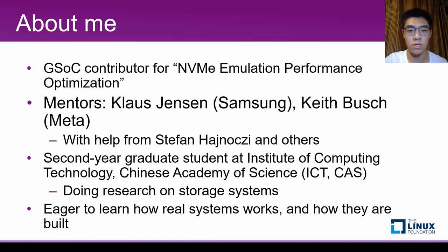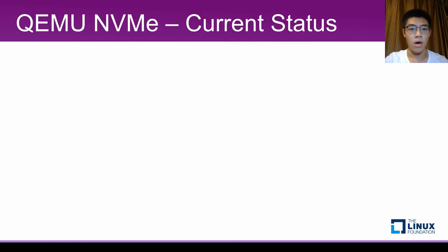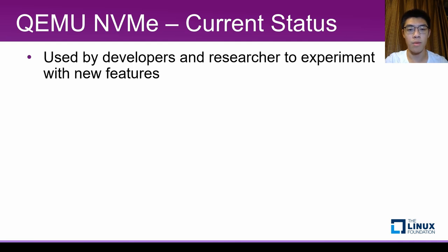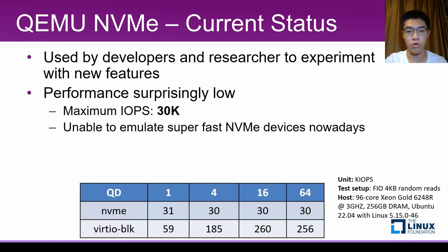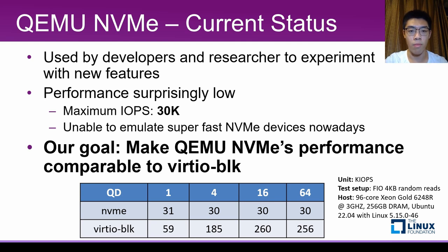The project proposal was originally suggested in 2018 by Huicheng Li and Paolo Bonzini, but was not picked up until this year. Currently, the emulated NVMe device is mainly used by developers and researchers to prototype new NVMe features and experiment with drivers and systems interacting with NVMe devices. The device is PCIe-based and supports all mandatory features of NVMe version 1.4. While the device model does a good job as a research and test platform, the performance is surprisingly low compared to the VirtIO block device. So basically, the goal of our work is to make QEMU NVMe's performance at least comparable to VirtIO block.